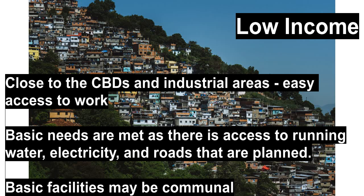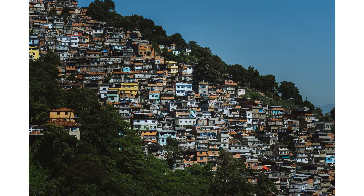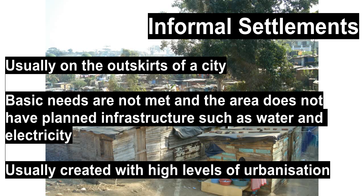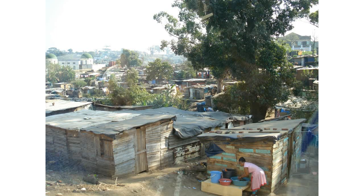Low income areas are close to the CBD or to industrial areas, because it's expensive to travel to work, so people living close to nearby jobs makes sense. These areas are planned, so there are basic facilities like water, electricity, and roads, but little beyond that. Informal settlements are on the outskirts of the city and are often a knock-on effect of massive urbanization. In South Africa, when the pass laws were abolished in 1986, there was a lot of urbanization from the homelands, resulting in many informal settlements where people lack access to basic needs because the government couldn't keep up with demand.